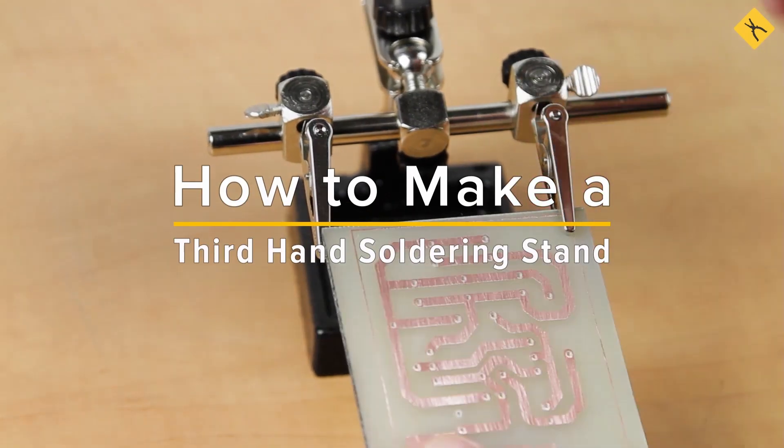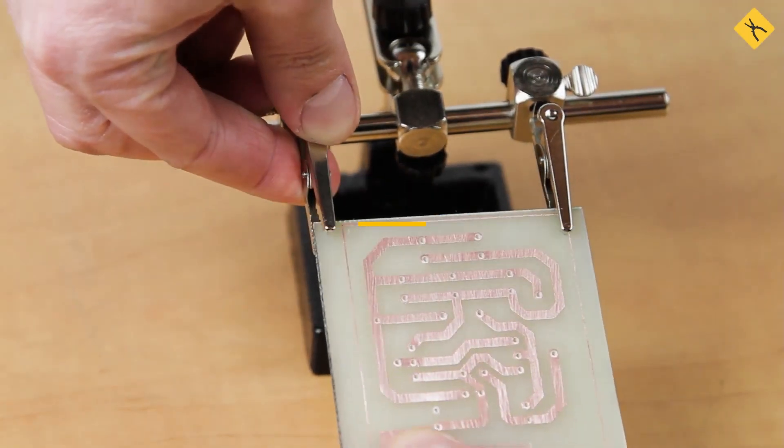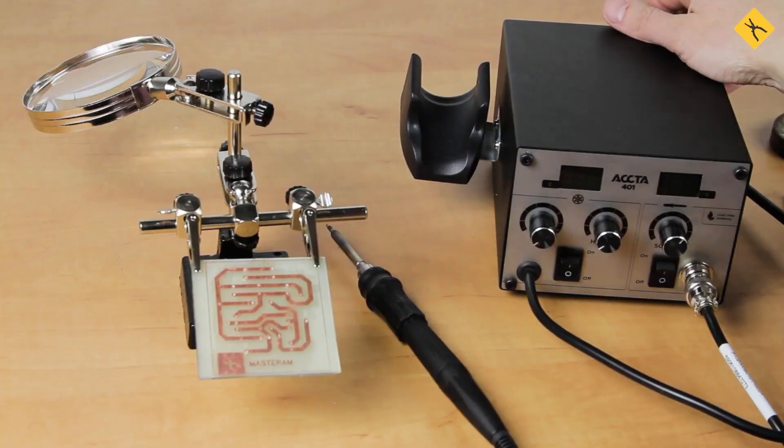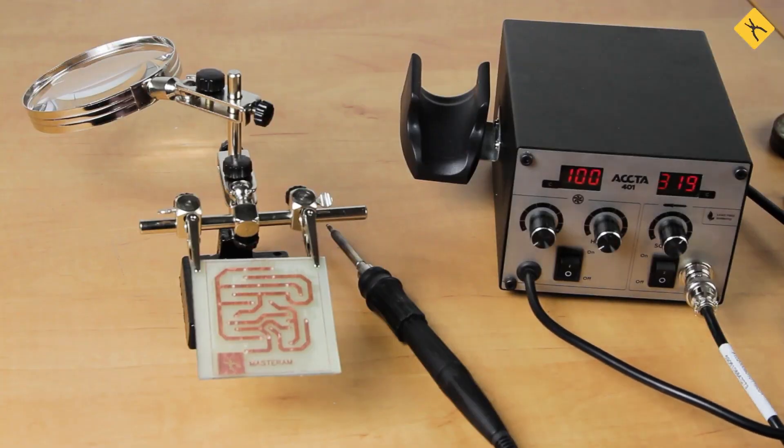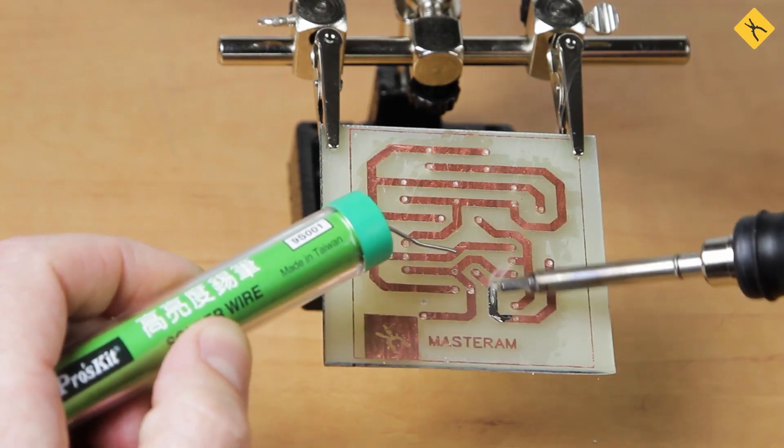Hi everyone! Today we are going to put together a third hand soldering stand. The third hand stand is used as a soldering helping tool to secure boards and other components and thus keep your hands free.